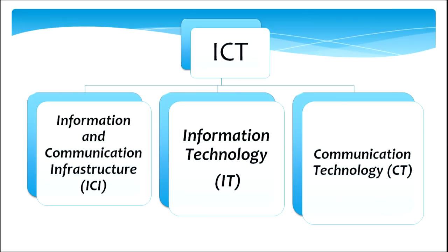Services such as electronic mail — or what we popularly call email — and video conferencing can be used for disseminating information. All these resources we are making use of in our day-to-day life too. Therefore, when we look at ICT, we can say ICT consists of three components: information and communication infrastructure (ICI), information technology (IT), and communication technology (CT).